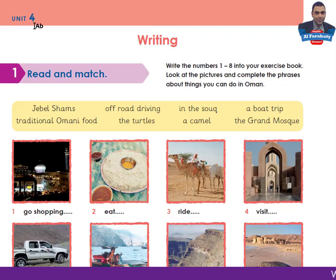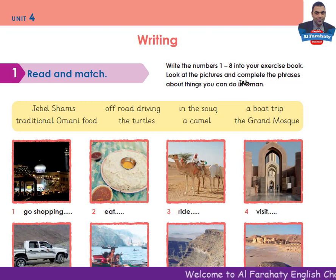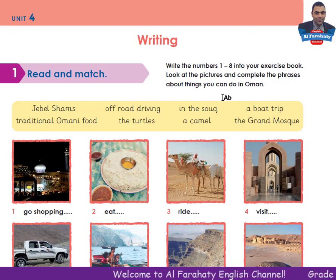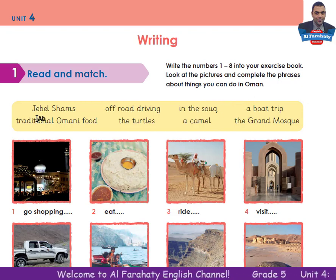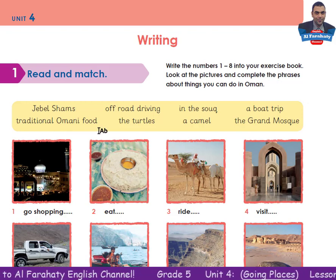Unit 4, Writing section, Activity 1. Read and match. Write the numbers 1 to 8 into your exercise book. Look at the pictures and complete the phrases about things you can do in Oman. Number 1: Jabal Shams. Traditional Omani food.